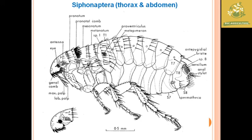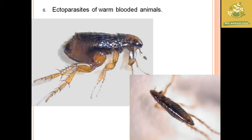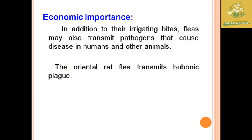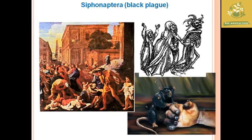Looking at species of economic and medical importance, the oriental rat flea causes irritating bites. This is the most devastating disease vector from early times — the rat flea is associated with plague, which was the most devastating disease in early human history.